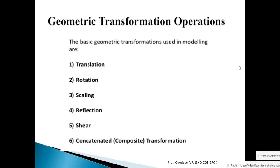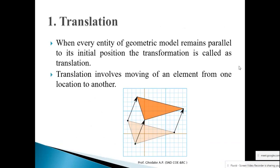Fourth is reflection or mirror. If you want to perform a mirror reflection of a geometry about the x-axis, y-axis, minus x, minus y, or about a line y = mx + c, that is reflection. Fifth is shear — used to slant the image or geometry along the x-axis or y-axis, called x-shear and y-shear. Sixth is composite transformation, which is a combination of any two or more types of transformations. In the previous session we discussed translation: when every entity of the geometric model remains parallel to its initial position, such a transformation is called translation.